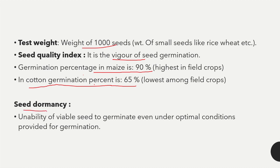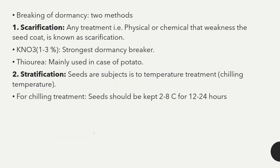The next topic is seed dormancy — the inability of a viable seed to germinate even under optimal conditions provided for germination. Seed dormancy ko hum resting period bhi bolte hain. Methods to break seed dormancy include: first, scarification — any physical or chemical treatment that weakens the seed coat. Second, stratification.